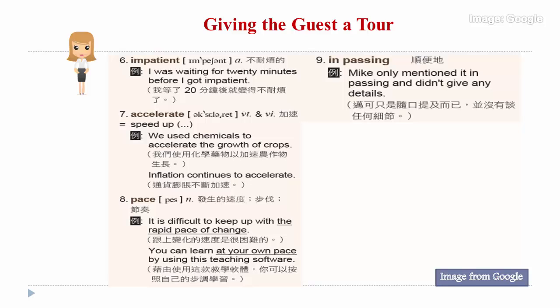Seven: accelerate. Accelerate means to speed up. For instance: we use chemicals to accelerate the growth of crops, such as greens and oatmeal. Or: inflation continues to accelerate — something heard a lot in the market.